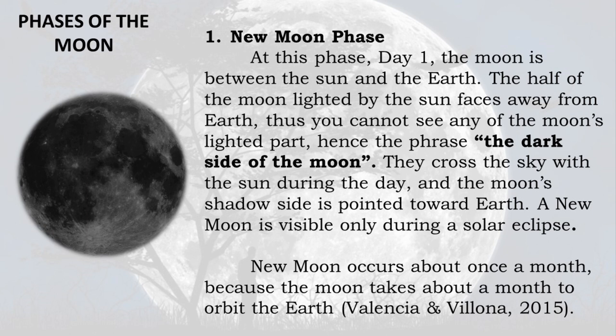Phase 1 — New Moon: At this phase, day 1, the moon is between the Sun and the Earth. The half of the moon lighted by the Sun faces away from Earth; thus, you cannot see any of the moon's lighted part — hence the phrase 'the dark side of the moon.' The moon crosses the sky with the Sun during the day and the moon's shadow side is pointed toward Earth. A new moon is visible only during a solar eclipse.